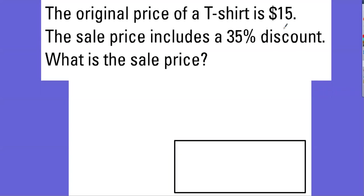The original price of a t-shirt is $15. The sale price includes a 35% discount. What is the sale price?